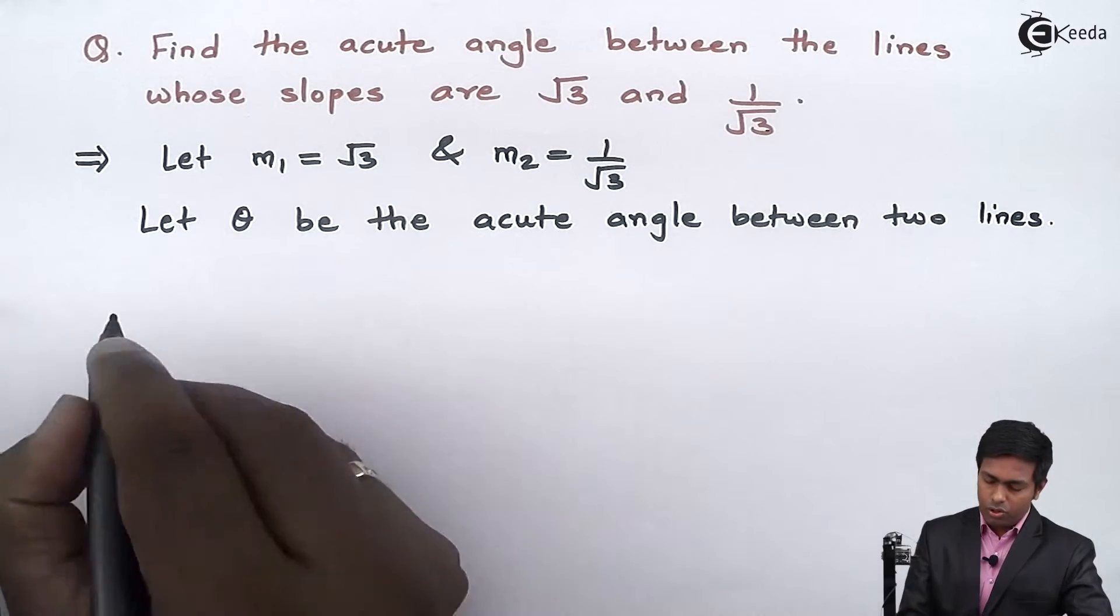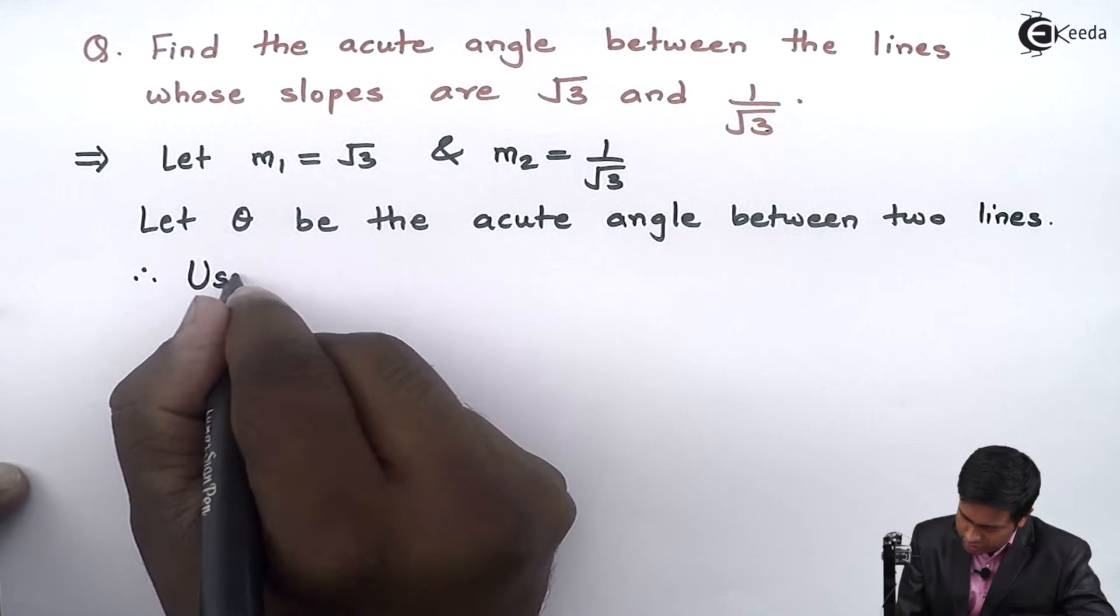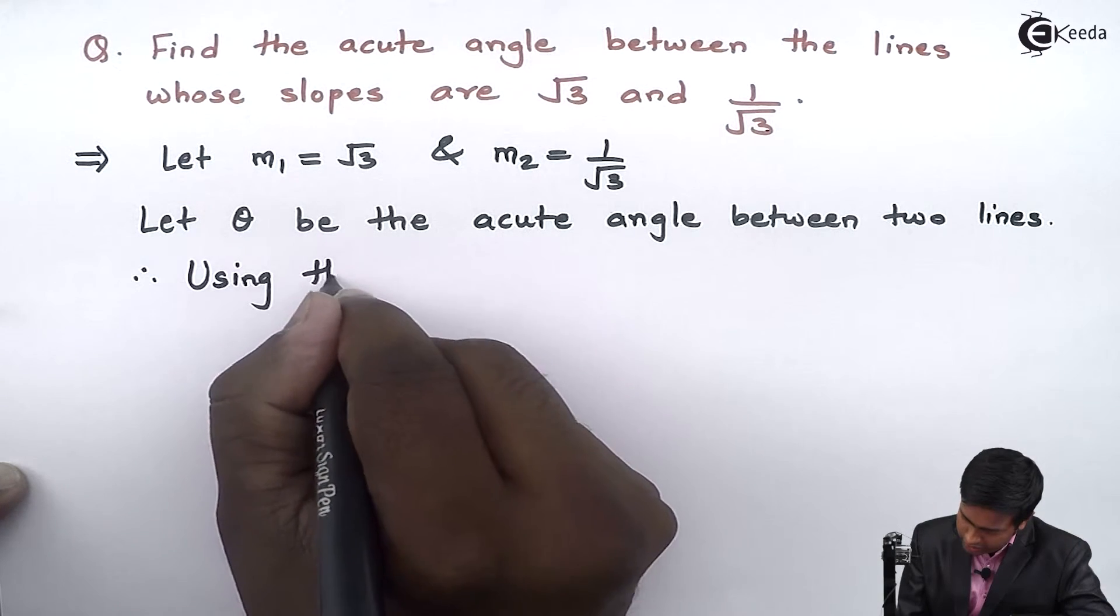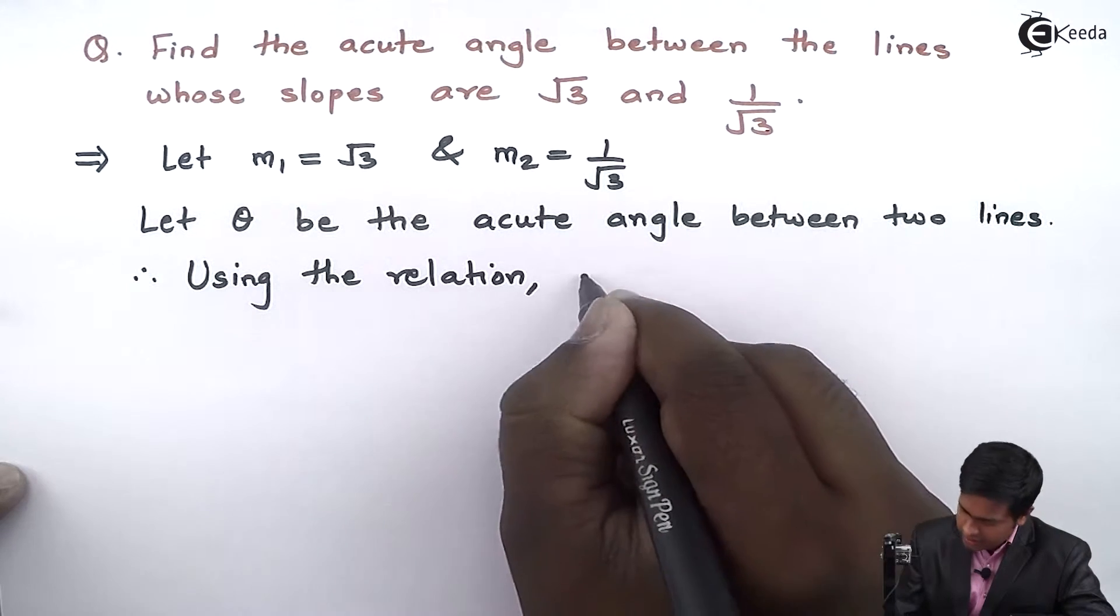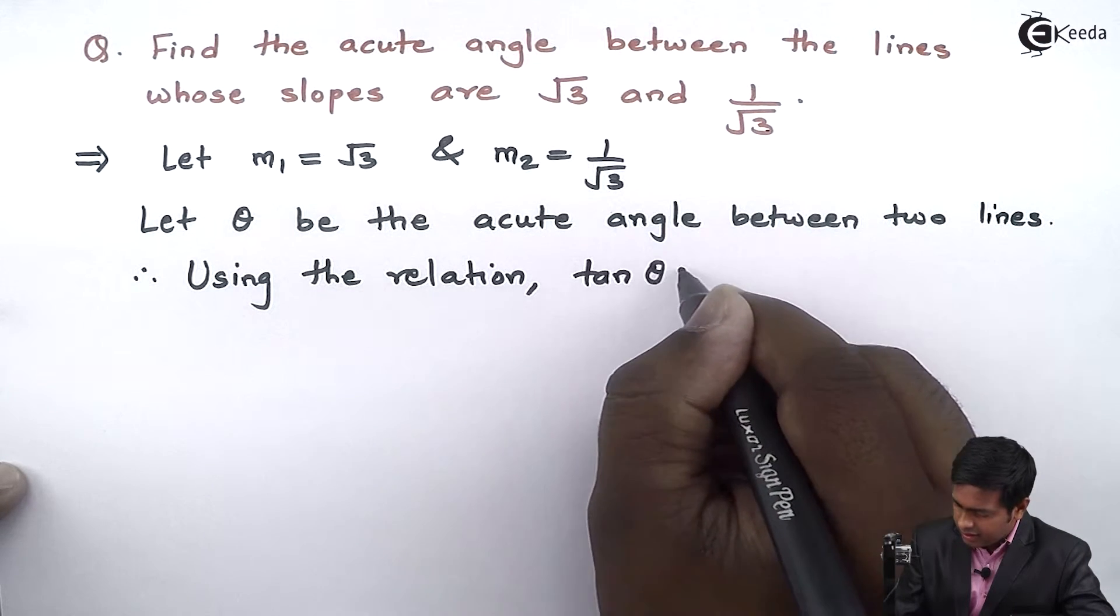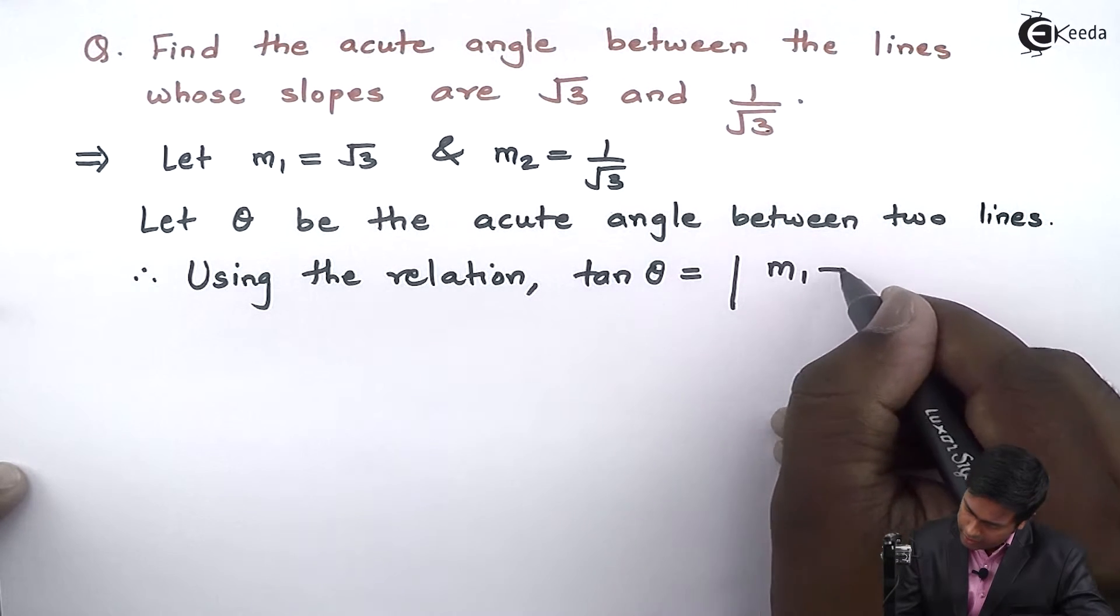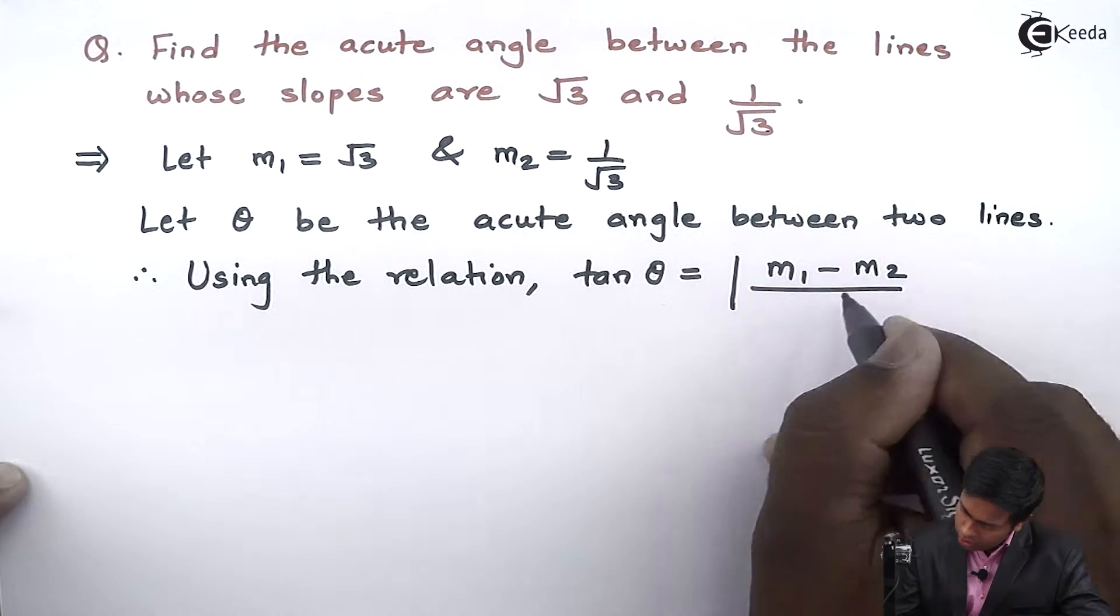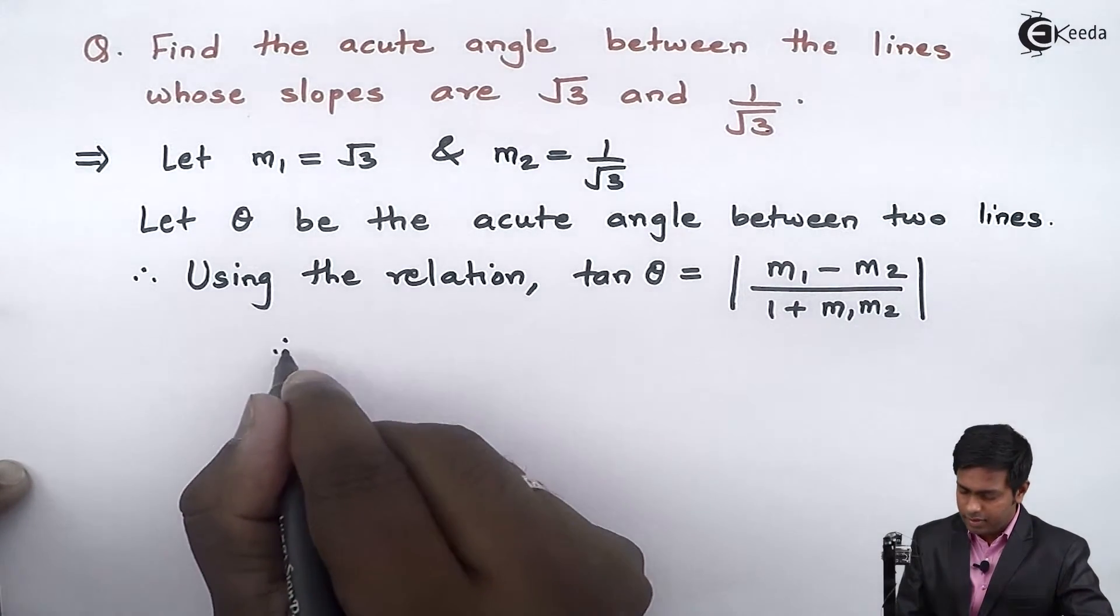Therefore, using the relation tan θ = |m₁ - m₂| / (1 + m₁m₂), we get tan θ equals...